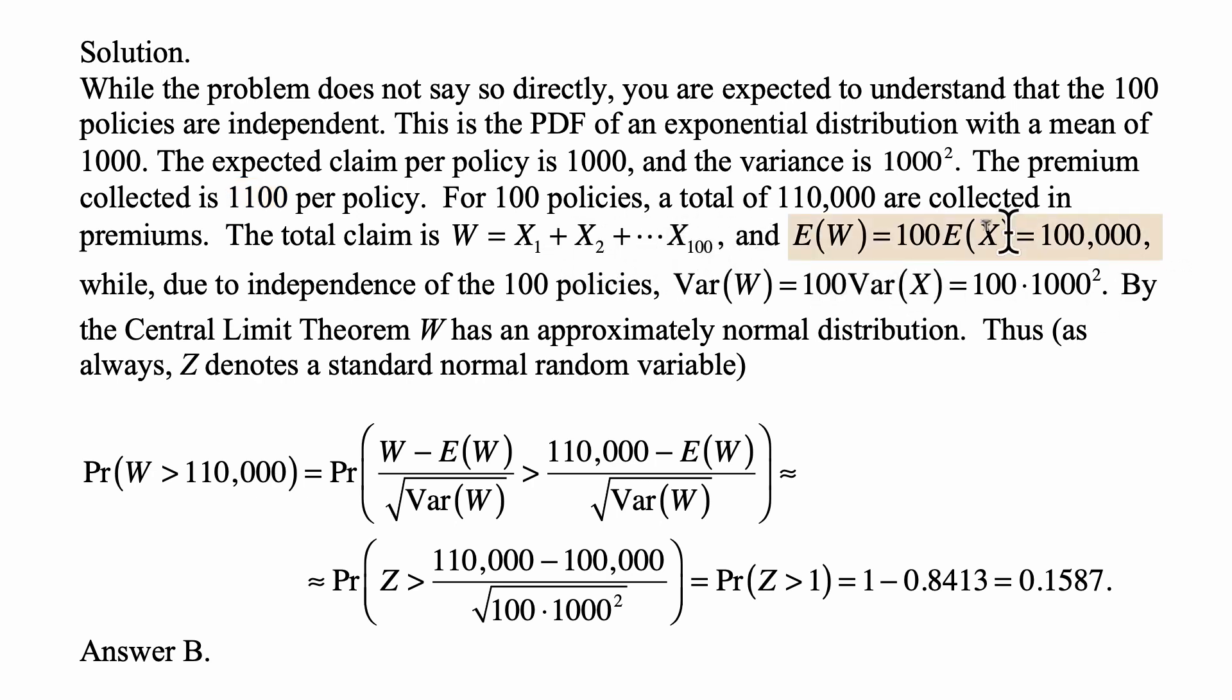The expected value is, of course, the sum of individual expected values. So the expected value of a claim is 100 times E(X), where E(X) is known to be 1,000. So that's 100,000.